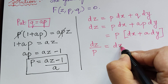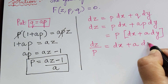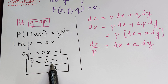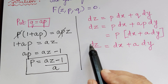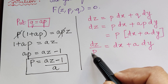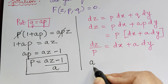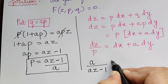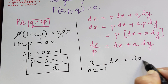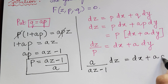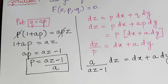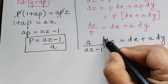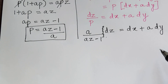Now at the place of p we substitute (az − 1)/a. Since we have 1/p, we substitute the reciprocal, which is a/(az − 1). So the equation becomes: a/(az − 1) dz = dx + a dy. We now integrate both sides.